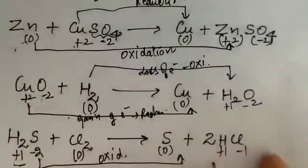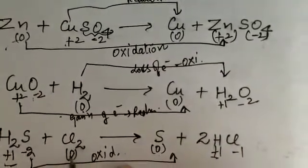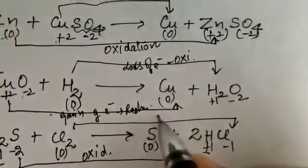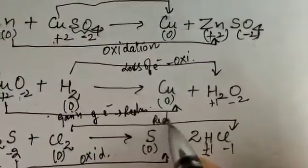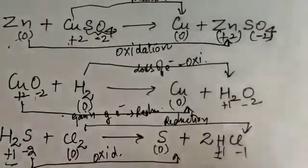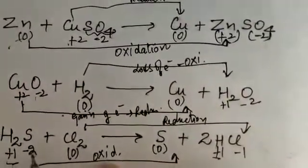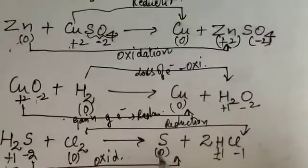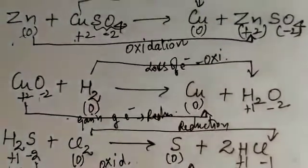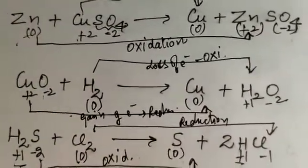There is no change in hydrogen's valency — it stays plus 1 to plus 1, so we skip hydrogen. Looking at chlorine, it went from zero to minus 1, meaning it is gaining one electron. Gain of electron is called reduction, so chlorine is undergoing reduction and sulfur is getting oxidized. This is all about our oxidation and reduction trick — learn it properly. Thank you, bye bye.